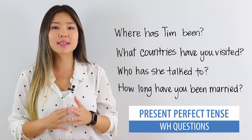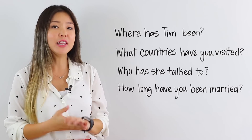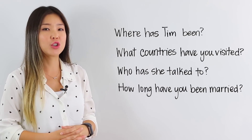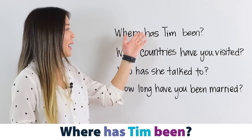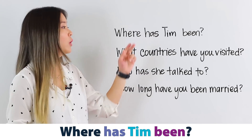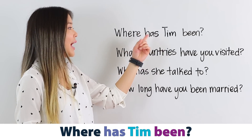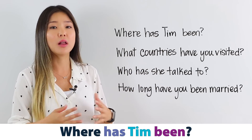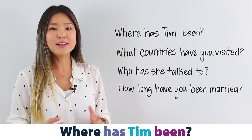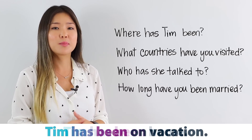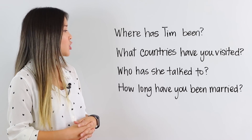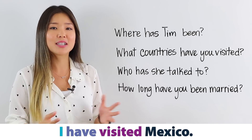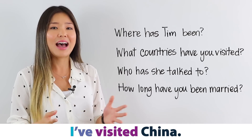Now I'll briefly introduce how to ask WH questions in the present perfect tense. Take a look at the board — I have where, what, who, and how. These go at the beginning of the question. Let's take a look at the first example: Where has Tim been? You'll notice we follow the WH word with has or have. In this case I use has because the subject is Tim, and Tim is a he. Then we follow with the past participle of the verb. Where has Tim been? I can answer: Tim has been home. Or Tim has been on vacation. The next question says: What countries have you visited? I can answer: I have visited China. Or: I have visited Mexico. You can also use the contraction — I've visited China.